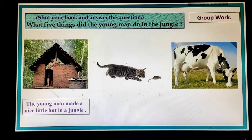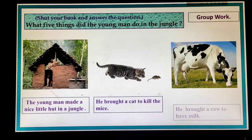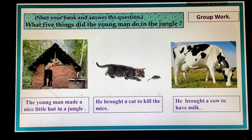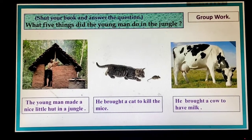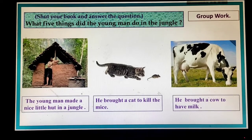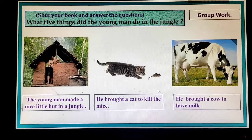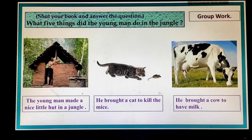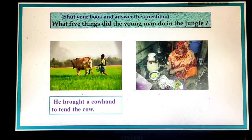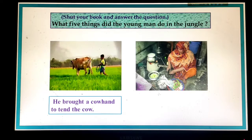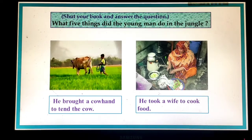My dear students, what five things did the young man do in the jungle? The young man made a nice little hut in the jungle. He brought a cat to kill the mice. He brought a cow to have milk. He brought a cowherd to tend the cow. And he took a wife to cook food.